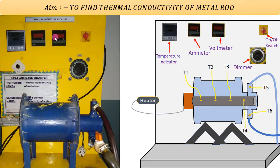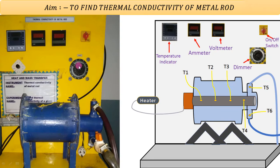Here you can see this black color knob, which is known as a dimmer. The main function of the dimmer is to control voltage and enhance current. During the experiment, we require heating the metallic rod, so we are supplying voltage to the heater. Using the dimmer, we are able to set different voltages and achieve different heating rates. For experimental purposes, we generally provide voltage in the range of 70 to 80 watts.